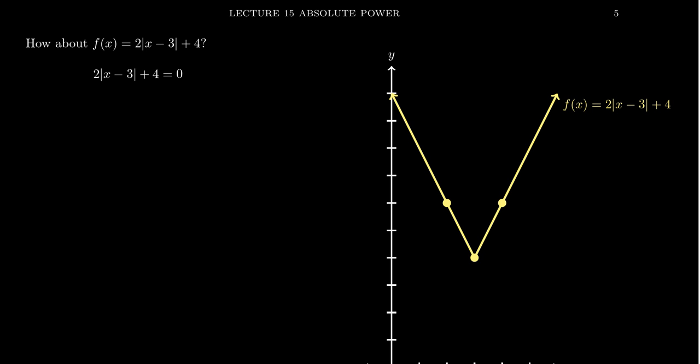And if we try to solve that one, we'll see what happens. So we're going to get minus 4 on both sides. The 4s on the left would cancel. This then gives us 2 times the absolute value of x minus 3 is equal to negative 4. Next, divide both sides by 2. So the 2 cancels right here. And then we get the absolute value of x minus 3 is equal to negative 2.